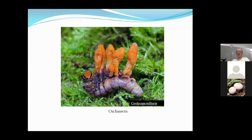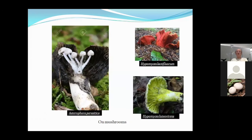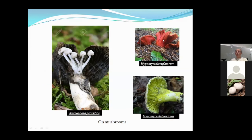Some fungi grow on insects — Cordyceps militaris grows on butterfly larvae or pupae. These Ascomycetes are related to cup fungi and Cordyceps species have been used in Asian and Chinese medicine for thousands of years, and are now cultivated. Some fungi even grow on other mushrooms, like Asterophora parasitica growing on Russula mushrooms, or Hypomyces species, which are Ascomycetes parasitizing other mushrooms.